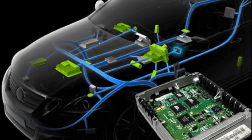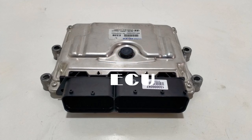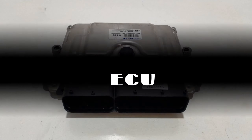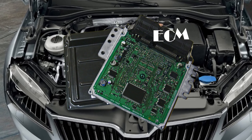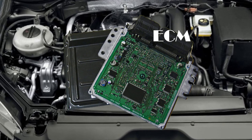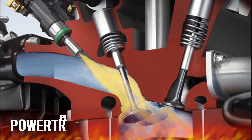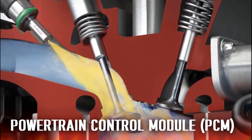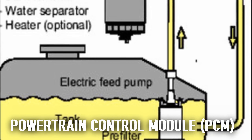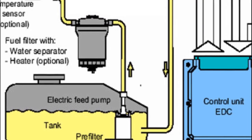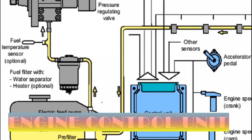In the automotive industry, the term ECU often refers to an engine control unit, ECU, or an engine control module, ECM. If this unit controls both an engine and a transmission, it is often described as a powertrain control module, PCM. For the purposes of this video, we will discuss the ECU as an engine control unit.